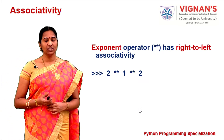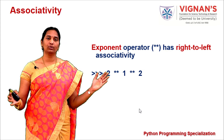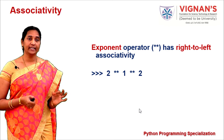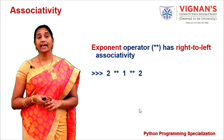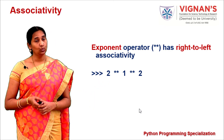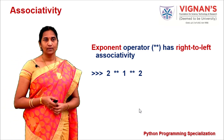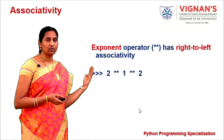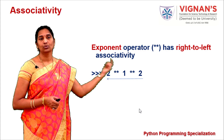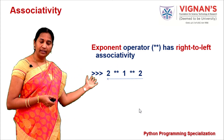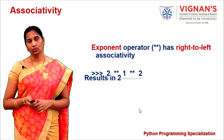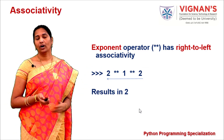There is an exception: not all operators follow left-to-right associativity. The exponentiation operator follows right-to-left associativity. Consider 2 ** 1 ** 2: evaluate right-to-left, so 1**2=1 first, then 2**1=2. The final result is 2.